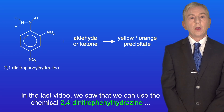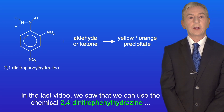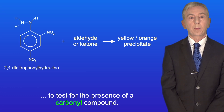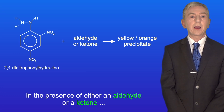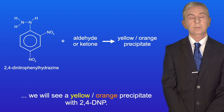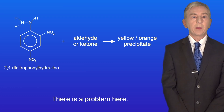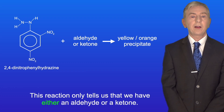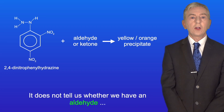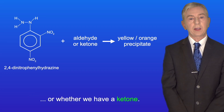In the last video, we saw that we can use the chemical 2,4-dinitrophenylhydrazine to test for the presence of a carbonyl compound. In the presence of either an aldehyde or a ketone, we will see a yellow-orange precipitate with 2,4-DNP. Now, there is a problem here — this reaction only tells us that we have either an aldehyde or a ketone.